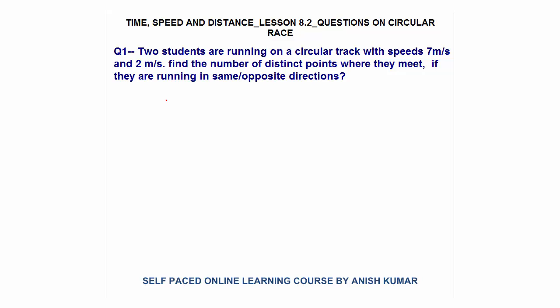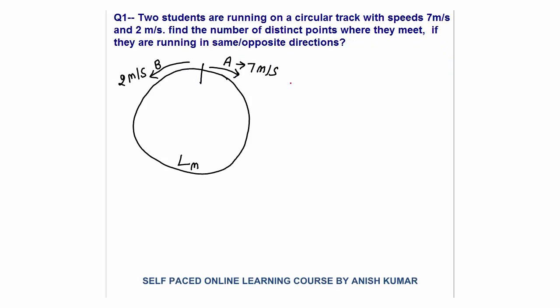First I will make a diagram in which they are running in the same direction, then a second diagram in which they are running in the opposite direction. Here I have made the diagram in which A and B are running in opposite direction with a speed of 7 and 2.